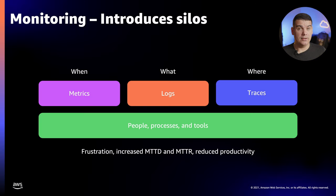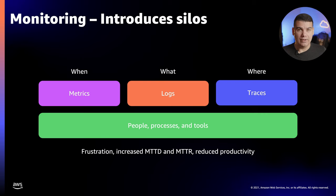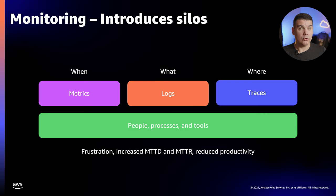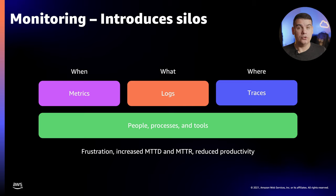Today, many organizations treat observability as a set of different silos, each one focusing on a signal type. By signal type, we mean telemetry data such as metrics, logs, and traces. They are usually handled by isolated processes, tools, and different teams, which is a massive source of frustration as it leads to increasing MTTD and MTTR — mean time to resolution — and also reduced productivity. At Elastic, we believe the first step to adopt observability is identifying the existence of those silos and understanding the problems they cause.